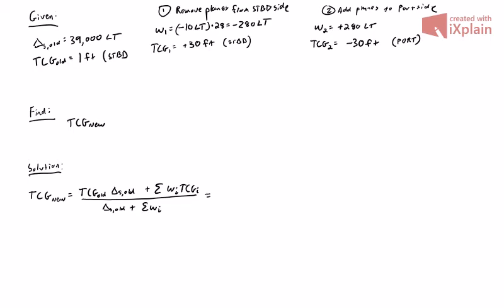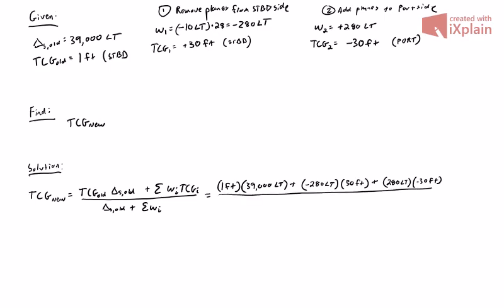Now we plug in. Our old transverse center of gravity was positive one foot, and our old displacement is 39,000 long tons. The first weight shift — removal of planes from starboard — is negative 280 long tons at positive 30 feet. The second weight shift — adding planes to port — is positive 280 long tons at negative 30 feet. We divide all of that by 39,000 long tons, minus 280 long tons for removing the planes, plus 280 long tons for adding the planes to port.